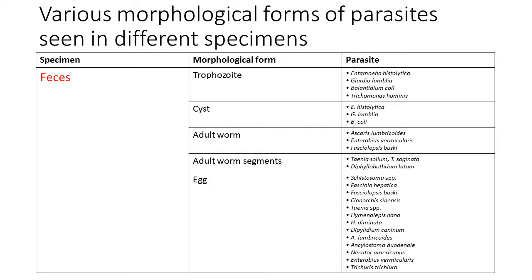When we consider the cyst stages, again Entamoeba histolytica, Giardia lamblia, and Balantidium coli we can see. When we consider adult worms, intestinal nematodes such as Ascaris and Enterobius vermicularis are normally very commonly seen in the stool sample. The segments — we can see segments in cestode parasites, for example Taenia solium and Taenia saginata.